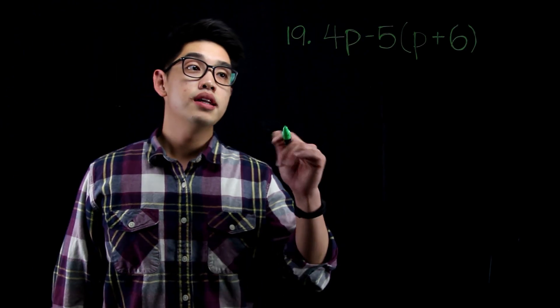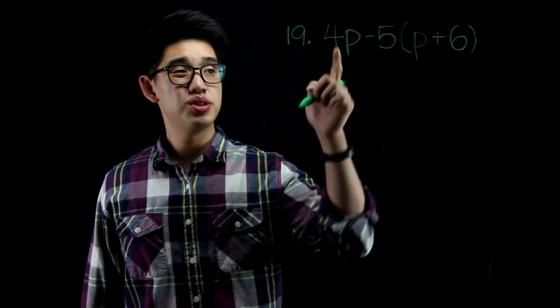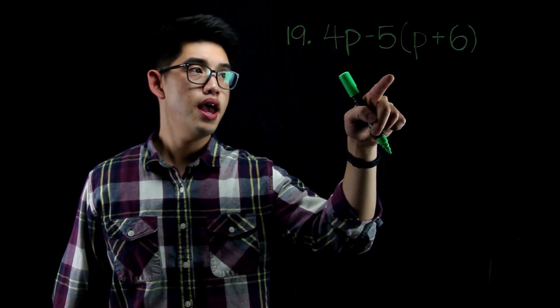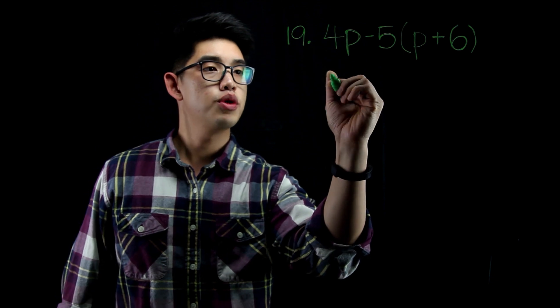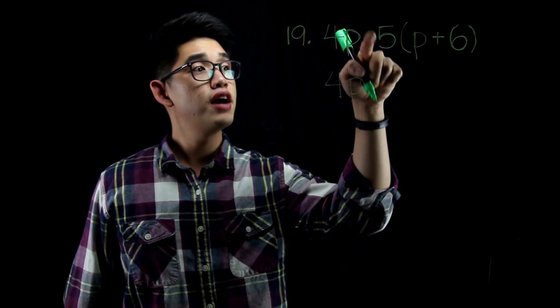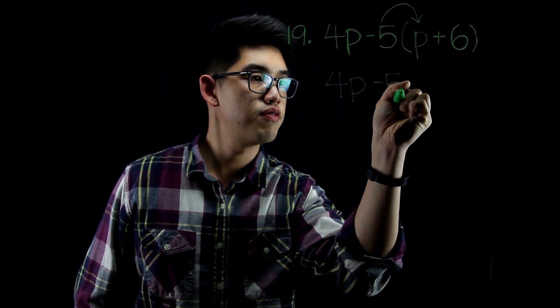For number 19, I have 4p minus 5 times the quantity p plus 6. First thing I'm going to do is I'm going to distribute the negative 5 into p and to positive 6. Let me write down 4p first. Alright, negative 5 times p, that's right. That's going to be negative 5p or minus 5p.